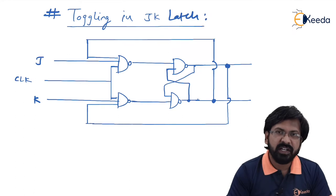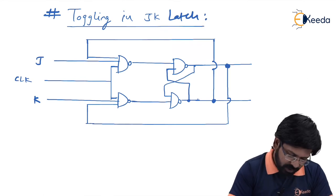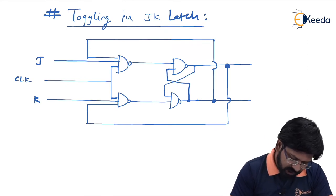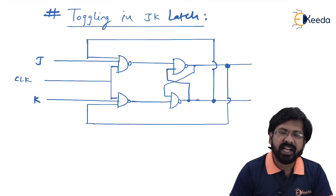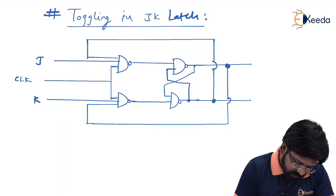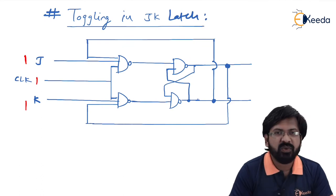Before understanding race around condition in JK latch, let us first understand how toggling happens in a JK latch. What I have drawn here is a JK latch and we are going to understand what exactly happens and how toggling takes place internally. When J=1 and K=1, and assuming clock=1, it is going to toggle the outputs.